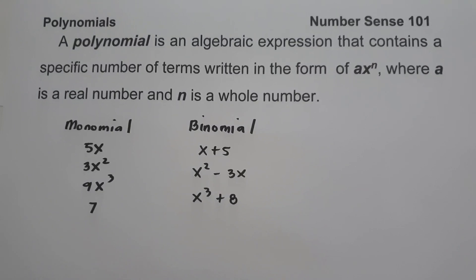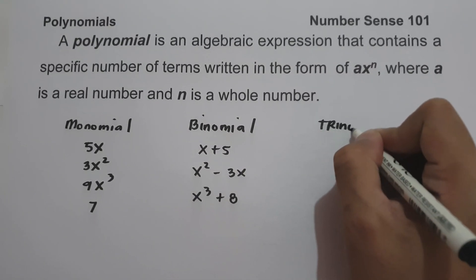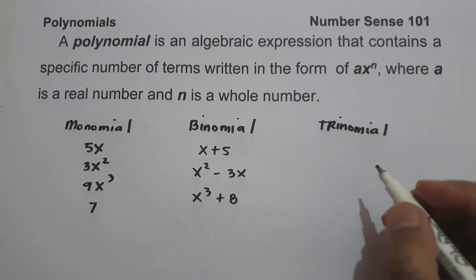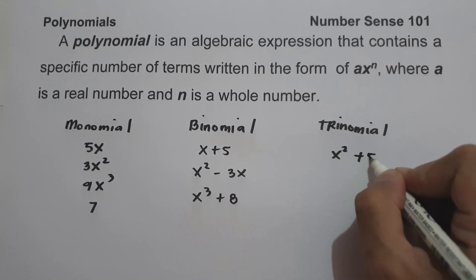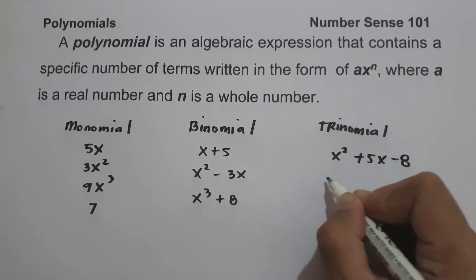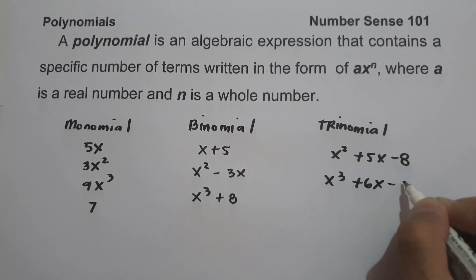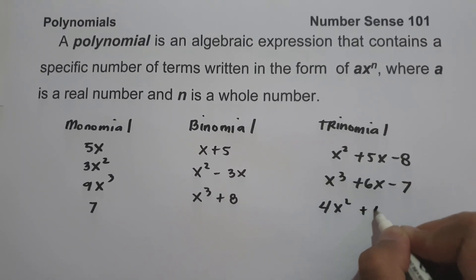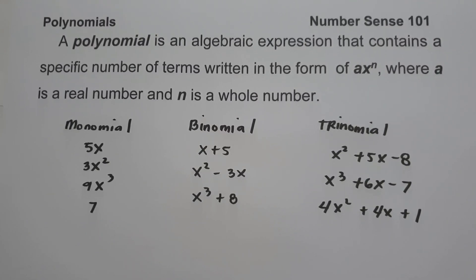A polynomial with three terms is what we call a trinomial. For example, x squared plus 5x minus 8, x cubed plus 6x minus 7, and 4x squared plus 4x plus 1. So those are the different kinds of polynomials.